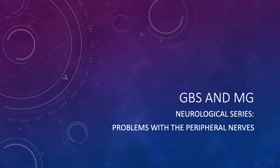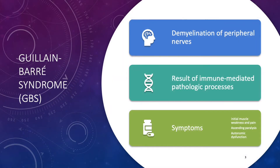First, let us speak of Guillain-Barré syndrome, or GBS. Guillain-Barré syndrome occurs when there is a demyelination of the peripheral nerves. This is a result of immune-mediated pathologic processes whose symptoms include initial muscle weakness and pain, ascending paralysis, and then autonomic dysfunction.